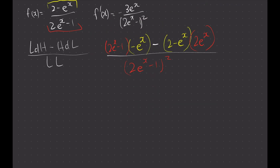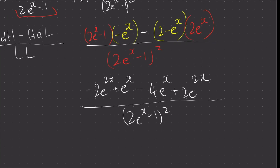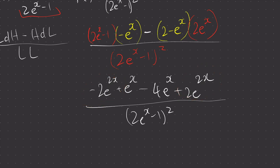If we expand the numerator, it becomes negative 2e to the power of 2x plus e to the power of x, minus 4e to the power of x plus 2e to the power of 2x, all over (2e to the power of x minus 1) squared. As you can see, the negative 2e to the power of 2x and positive 2e to the power of 2x cancel out.